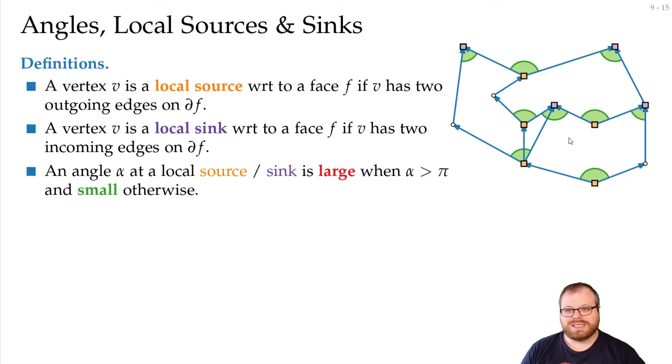And now you will see that here I skipped out a few of local sources and sinks. For example, here this vertex is also a local sink for the outer face. But here it has a large angle. This vertex is also a local source for here, but it has a large angle. This vertex is a local sink here with a large angle. And these are local sinks on the outer face with large angles.